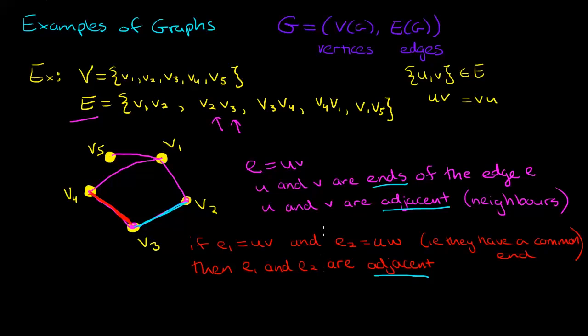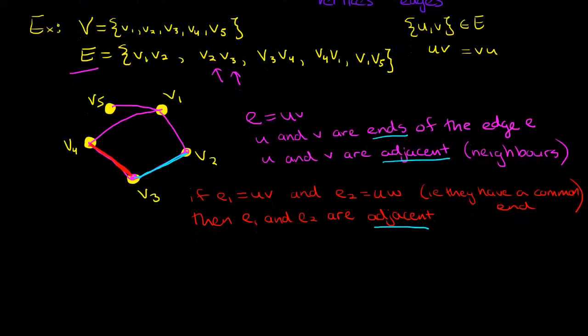So this was a fairly straightforward example. Let's take a look at one more example. My vertex set is A, B, and C. My edge set is just the single edge AB.